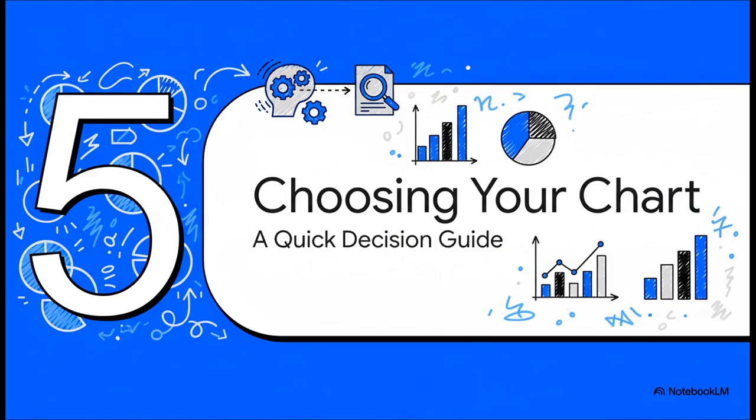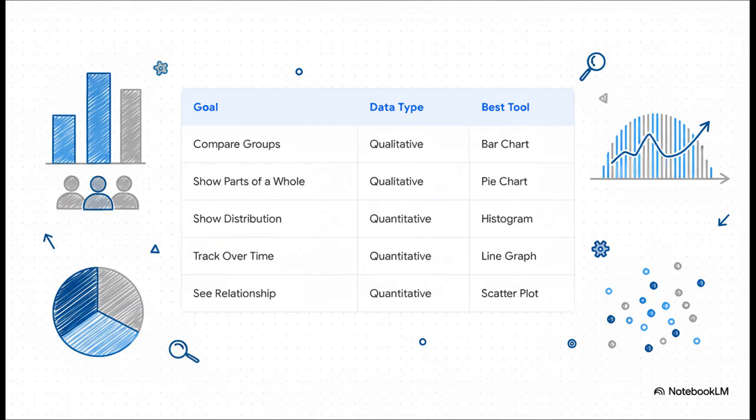We've gone through the whole toolkit. That's a lot to remember. So how do you pick the right one in the heat of the moment? Let's boil it all down into a super simple guide. It all comes down to your goal. Just ask yourself, what am I trying to do? If you want to compare groups, grab the bar chart. If you need to show parts of a whole, the pie chart is your friend.